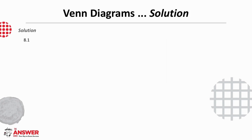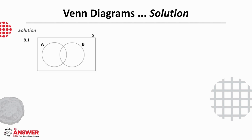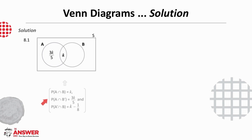To draw the Venn diagram we use the information given. We have two events A and B. The probability of the intersection of A and B is K. The probability of A and not B is 3K over 5, and the probability of B and not A is K minus 1 over 8. We're not given any other information and so this is our Venn diagram.